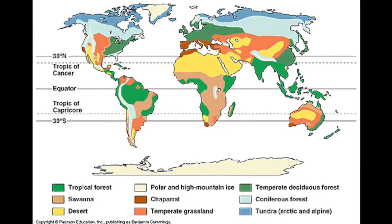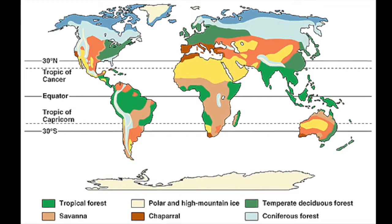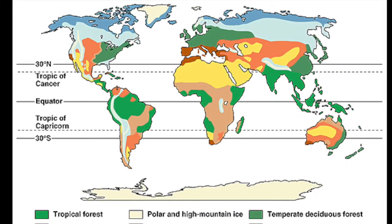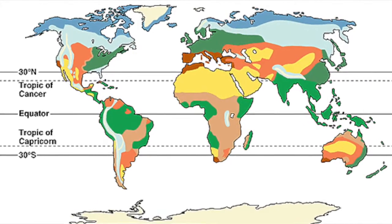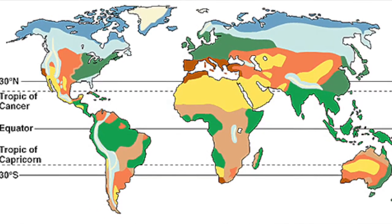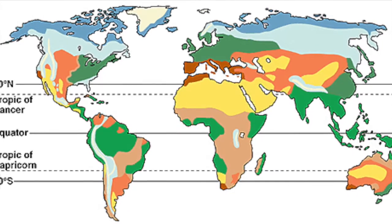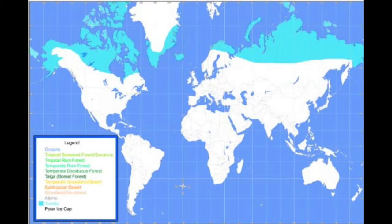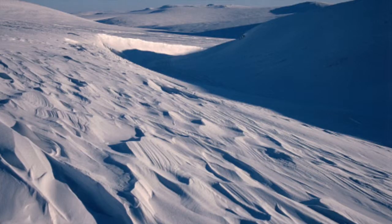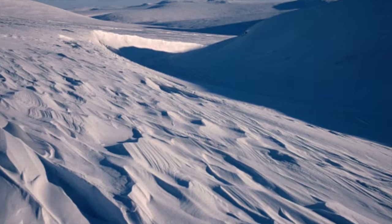Almost all tundras are located in the Northern Hemisphere, south of the polar regions. However, small tundra-like areas do exist in Antarctica and in the Southern Hemisphere. Tundra biomes encircle the North Pole and extend south to the coniferous forests of the taiga. Tundra can be located at altitudes 55 degrees to 70 degrees north.